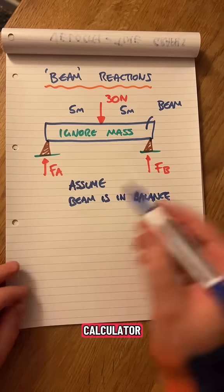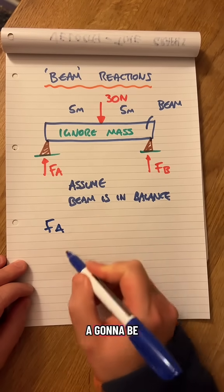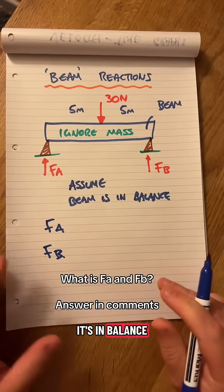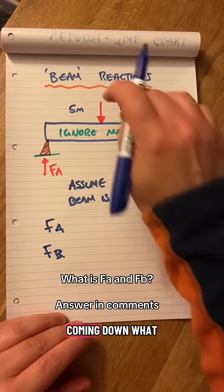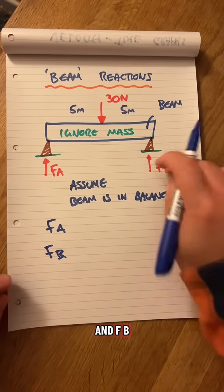Without using a calculator, what is F-A going to be and what is F-B going to be? It's in balance, ignore the mass. You've got 30 coming down. What is F-A and F-B going to be?